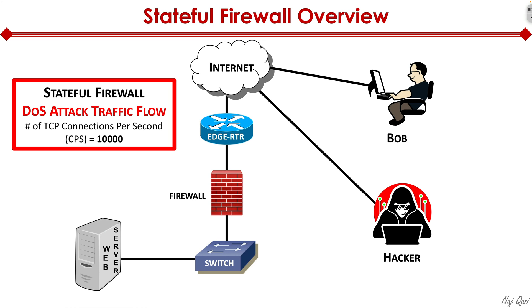If we didn't have a firewall, our legitimate user Bob would actually lose access to the web server because of the denial of service attack — the server would be so busy processing the hacker's requests that legitimate users could never connect. But thanks to the firewall, we can not only detect this malicious behavior but actually protect against it — we can take action and kill that traffic.